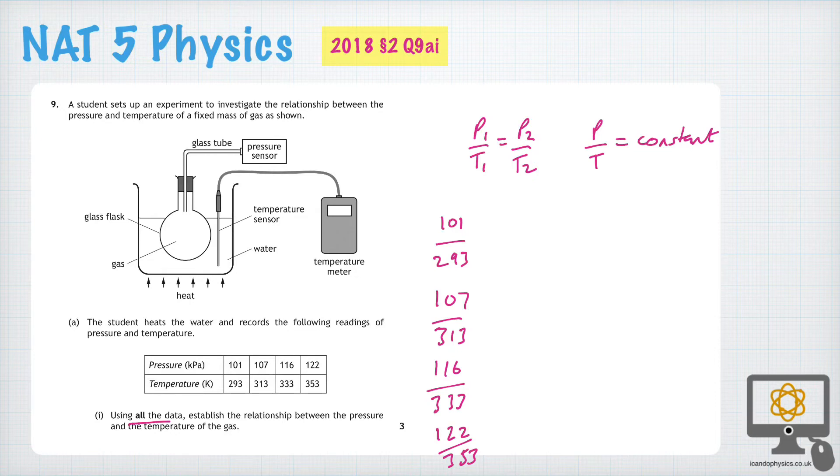Now if you do those calculations, you get approximately these values: 345, 342, 348, and 346. That's assuming 101 times 10 to the 3 in each of these cases for pressure.